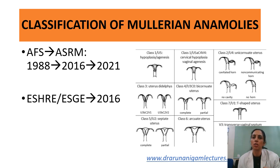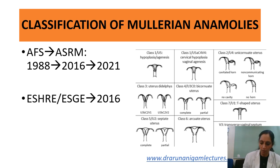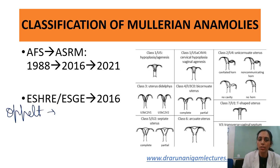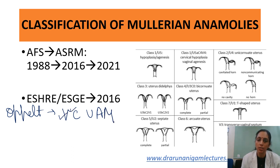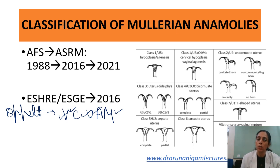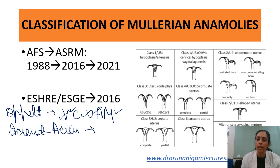There were some modifications given in 2014–16, but thereafter a few more people came with classifications. Opelt proposed the VCUAM classification — Vagina, Cervix, Uterus, Adnexa, and Associated Malformation — whose goal was to describe Mullerian anomalies accurately and precisely. In between, Acién and Acién also proposed a classification categorizing Mullerian anomalies according to their embryologic origin.